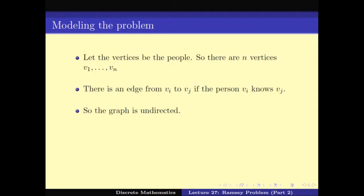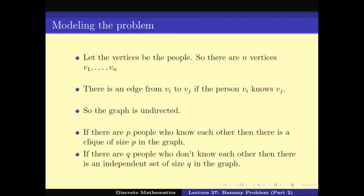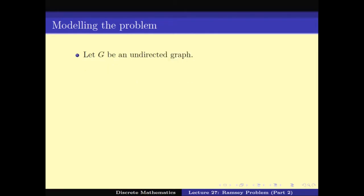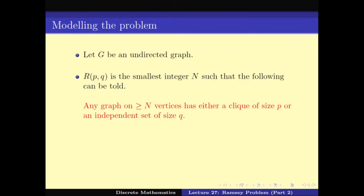What are we looking at? P people who know each other means P vertices such that between any two there is an edge — so that is a clique of size P. Similarly, Q people who don't know each other means Q vertices with no edges between any pair — so that is an independent set of size Q. Thus R(P,Q) is the smallest integer n such that any graph on at least n vertices has either a clique of size P or an independent set of size Q.